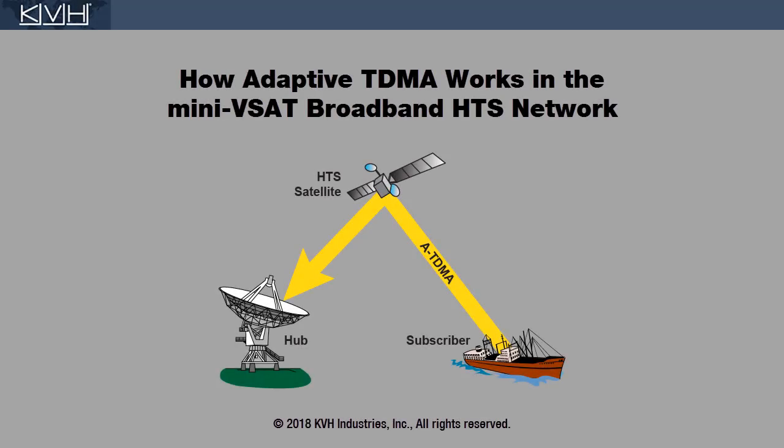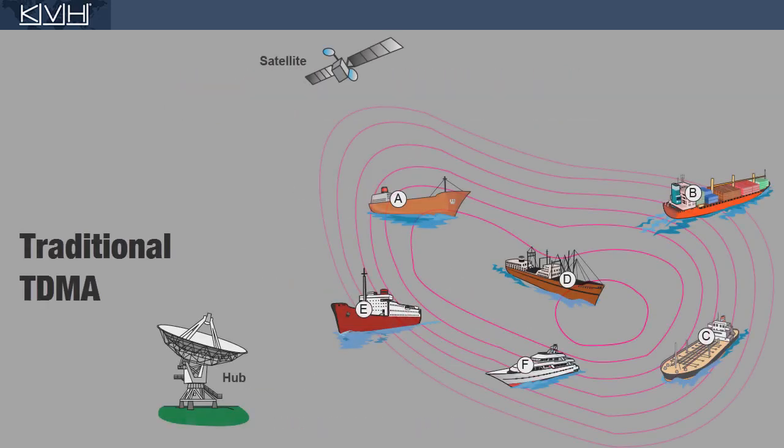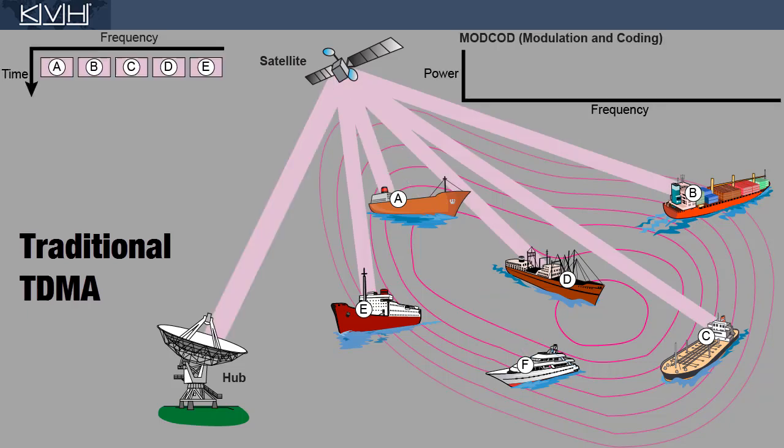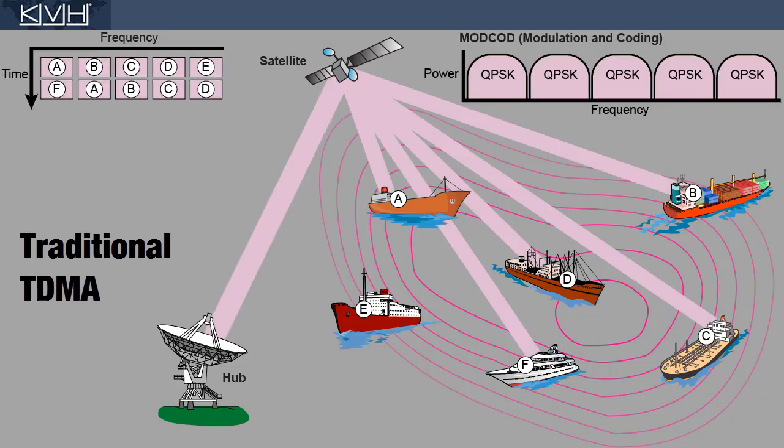This video explains how adaptive TDMA maximizes the performance and availability of the return link in the HTS network. In traditional TDMA, all vessels transmit data over the satellite using the same symbol rate, modulation, and error correction coding.